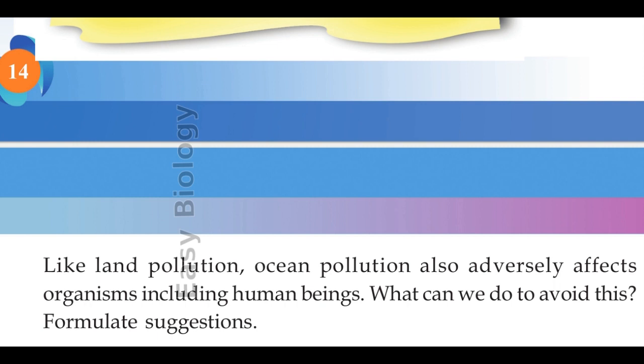Chemicals used in industries and agriculture get washed into the rivers and from there are carried into the oceans. These chemicals do not get dissolved and sink at the bottom of the ocean. Small animals ingest these chemicals and they are later eaten by large animals, which then affects the whole food chain.